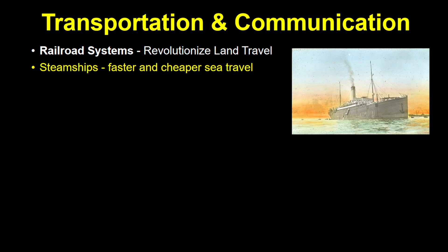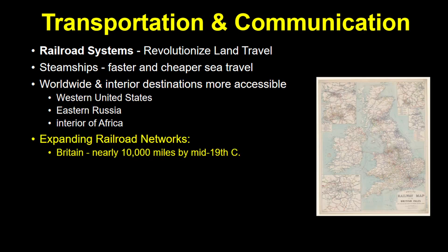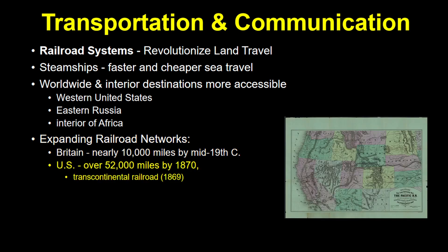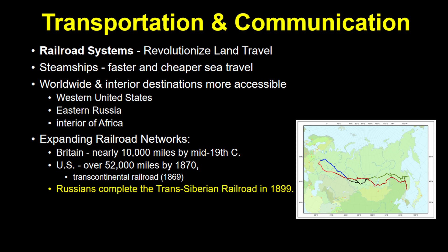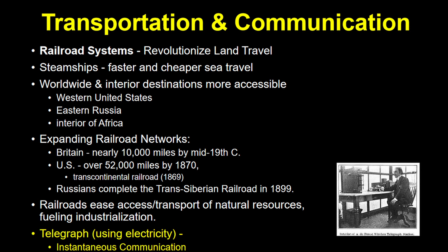It became much faster and cheaper to travel around the world and to interior regions — the western United States, eastern Russia, the interior of Africa — everywhere became easier to get to. By the mid-19th century, Britain had constructed nearly 10,000 miles of railroad. By 1870, the United States had more than 52,000 miles of it, most notably the transcontinental railroad that stretched across the entire nation. The Russians completed the Trans-Siberian Railroad in 1899. These railroads also facilitated even more industrialization because it became easier to access and transport natural resources like metals and timber. And the telegraph, which made use of electricity, allowed for nearly instantaneous communication.